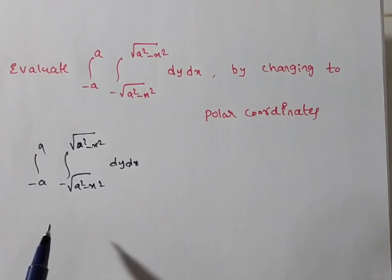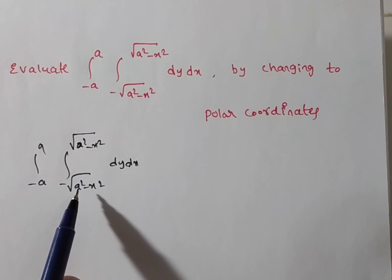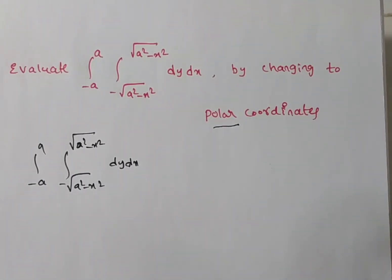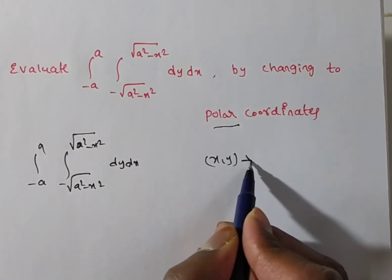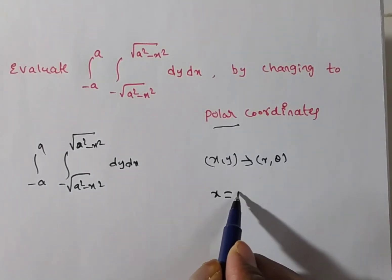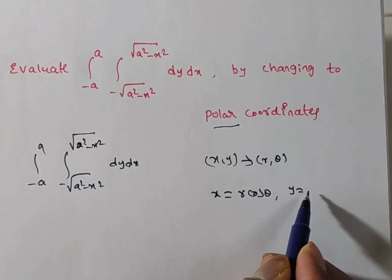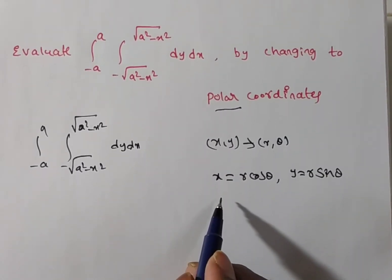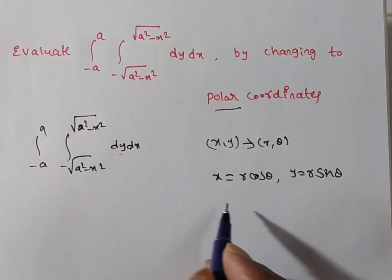This is in Cartesian coordinates. Now we have to evaluate this integration by changing into polar coordinates. To change into polar coordinates, we substitute x equals r cos theta, y equals r sin theta. We also have to change the limits from x, y to r, theta.